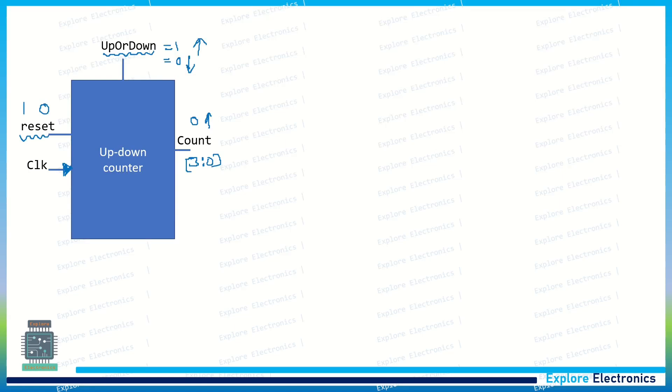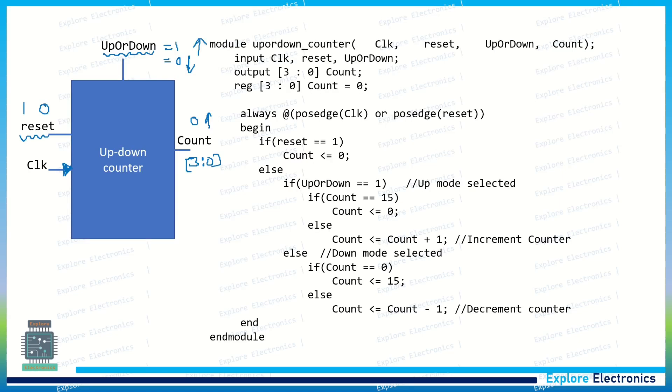So let us see the Verilog code. You can see module up or down counter. It has input clock, input reset, and one more signal up or down, and we have count. Here, clock, reset, and up down are declared as input ports, and count is an output port. Since it is a behavioral description, we need to represent the output as a register.